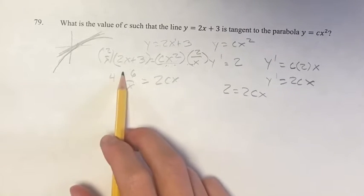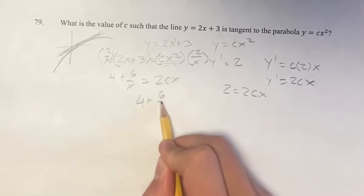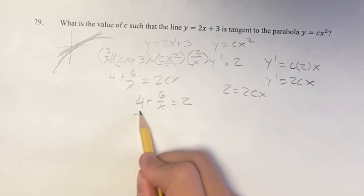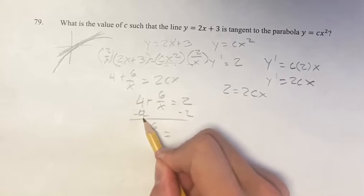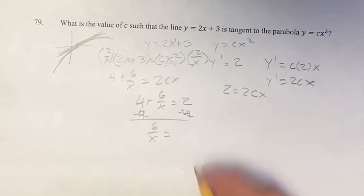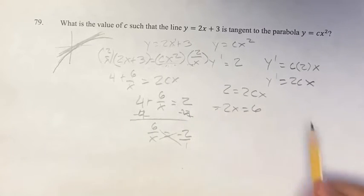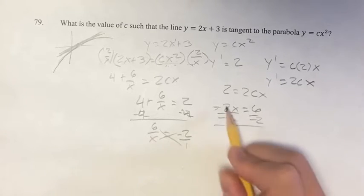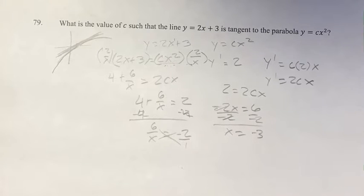So if this equals 2cx, and 2 equals 2cx, then 4 + 6/x = 2. Subtracting 4 from both sides, 6/x = -2. Cross-multiplying, you get -2x = 6. Solving for x, you get x = -3, and this is the point that they are intersecting at.